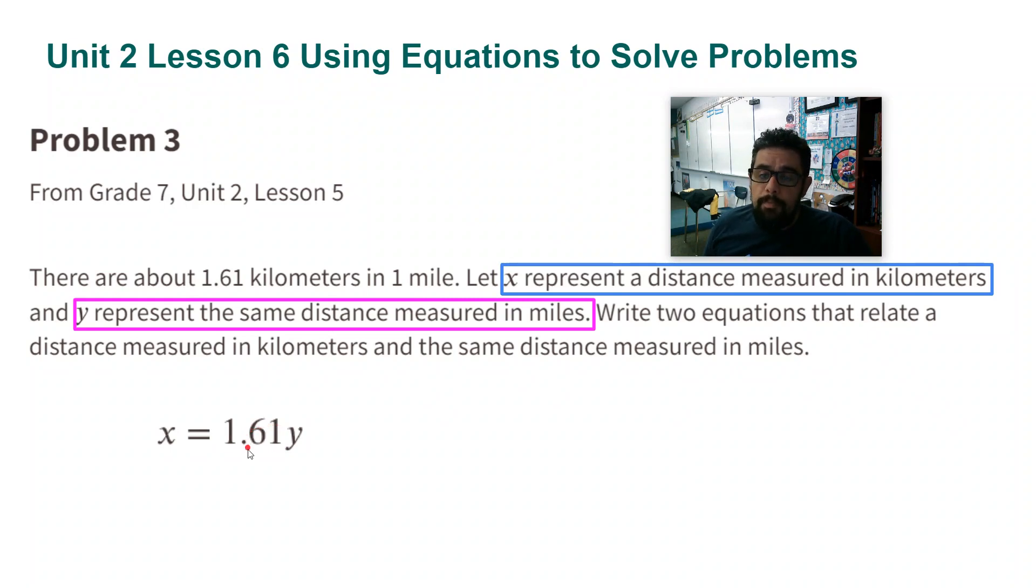The other equation: if I know the number of kilometers and I'm trying to find the number of miles, instead of multiplying by 1.61, I'm going to use the reciprocal, 1 over 1.61. Notice the variables also changed. So when I multiply by the reciprocal, I'm not multiplying the miles now. I am multiplying the kilometers, which is x. When I do that, it tells me the miles, which is y.